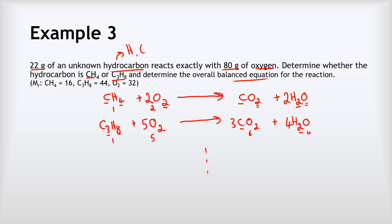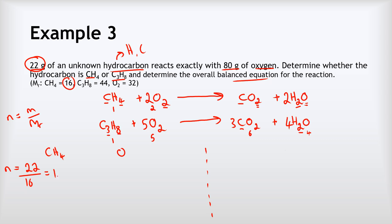For the methane equation: moles of methane = m/MR = 22 grams divided by 16, giving 1.375 moles. Moles of oxygen = 80 grams divided by MR of 32, giving 2.5 moles. So we have a ratio of 1.375 to 2.5.